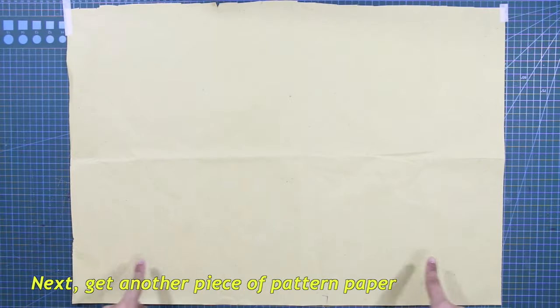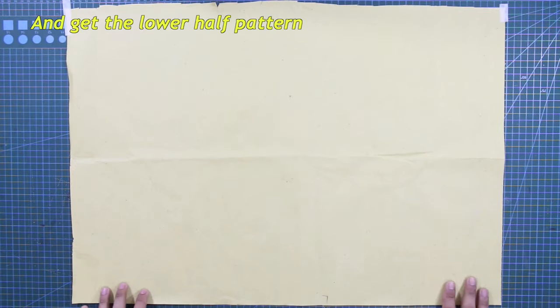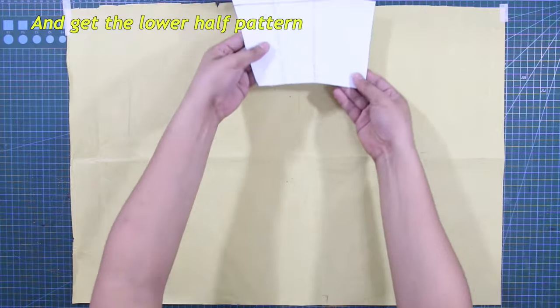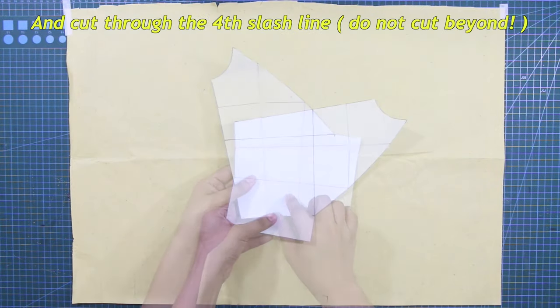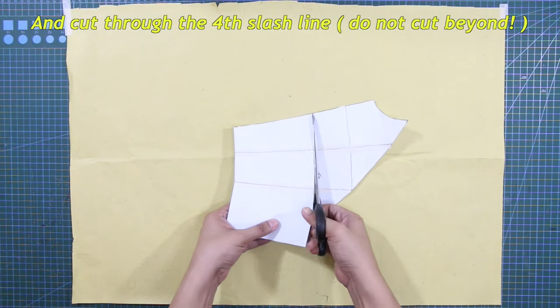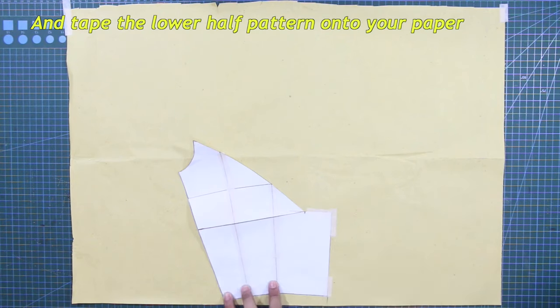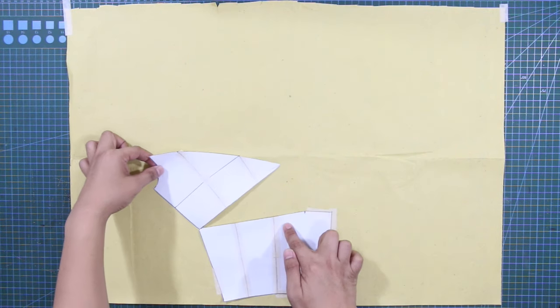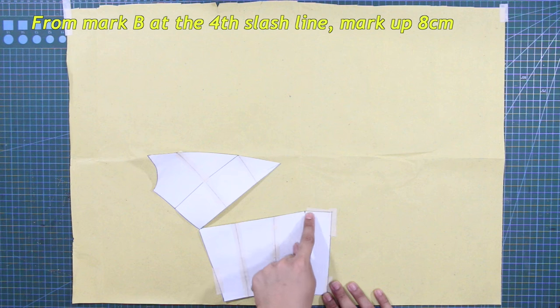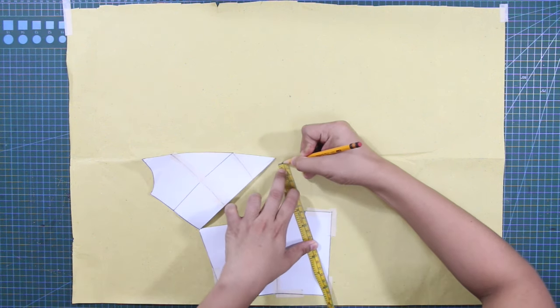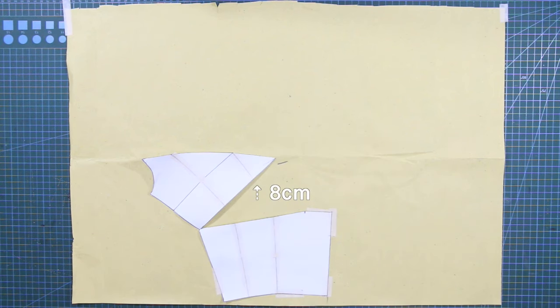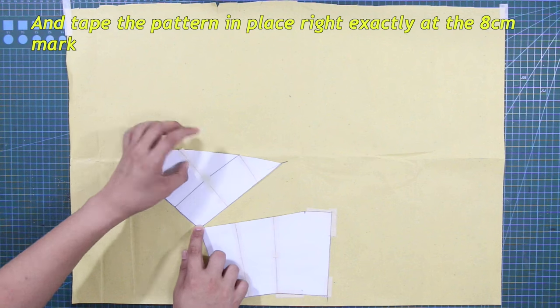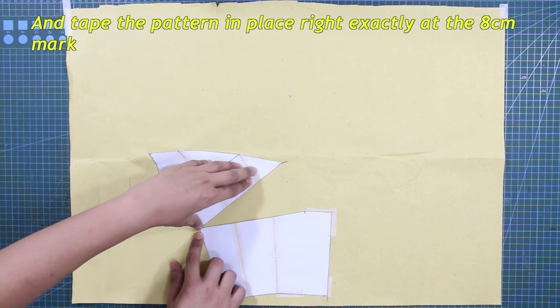Next, get another piece of pattern paper, and get the lower half pattern. And cut through the fourth slash line, but do not cut beyond. And tape the lower half pattern onto your paper. From mark B at the fourth slash line, mark up 8 cm and tape the pattern in place right exactly at the 8 cm mark.